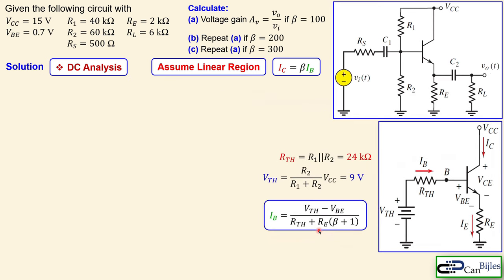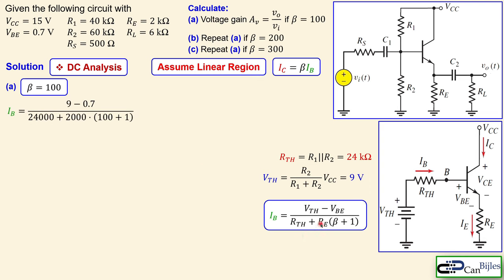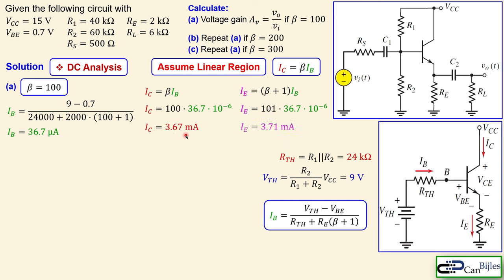Bringing together the Thevenin parameters and substituting beta equals 100, we calculate IB as 36.7 microamps. Multiplying by beta gives the collector current IC of 3.67 mA. The emitter current IE is 3.71 mA — slightly larger than the collector current, since IE always equals IC plus IB regardless of the operating condition of the BJT.